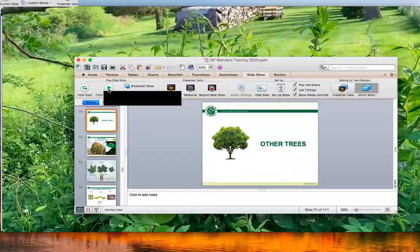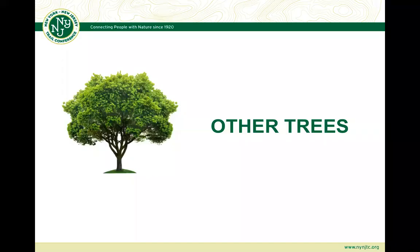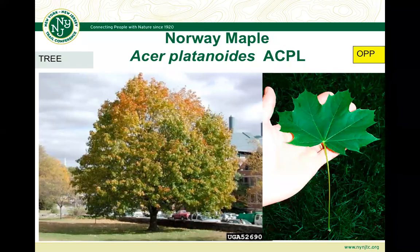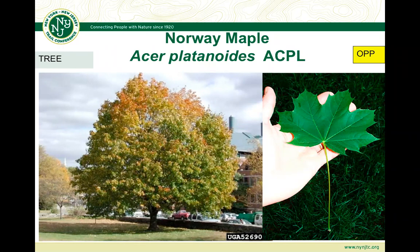The next tree on our list is Norway maple. These are really known for their very dense canopies — they were brought to the United States as a great shade tree, with broad dark-green leaves that provide a lot of shade. The problem is they start leafing out earlier than our native maples and stay greener longer, out-competing sugar maples.